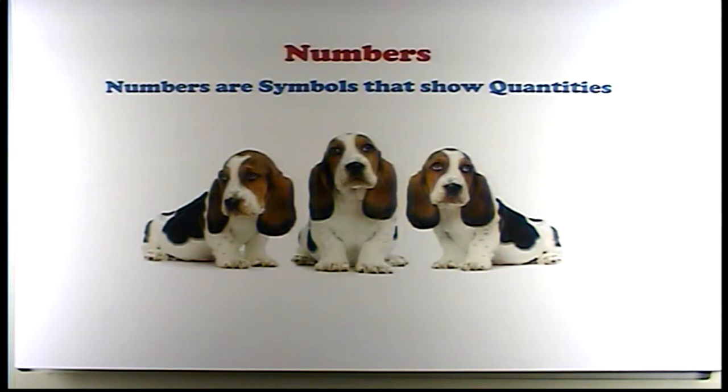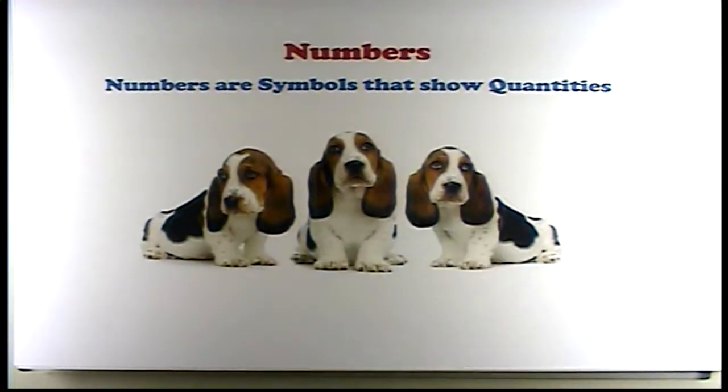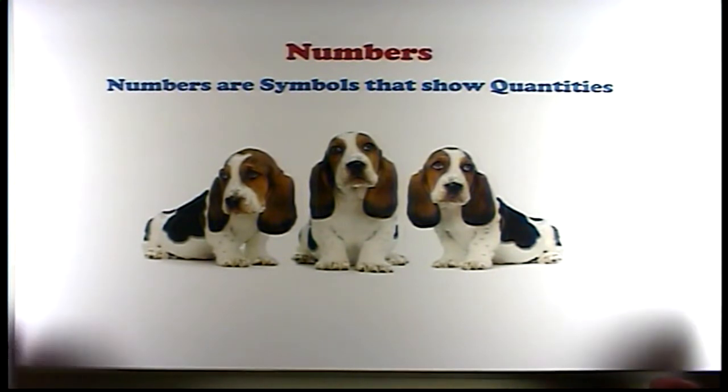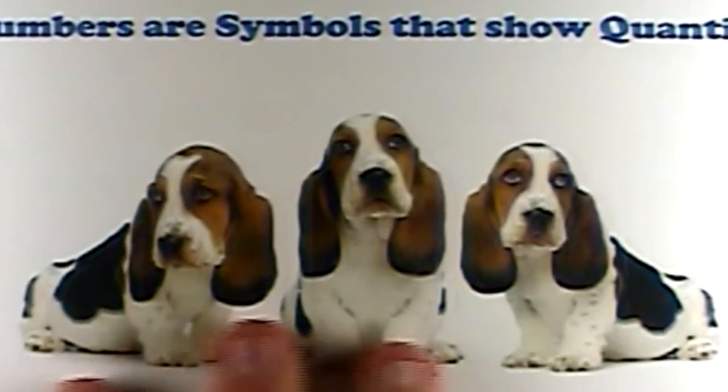Now, numbers are symbols that show quantities. For instance, right here we have a picture of three dogs, and I can count them: one, two, three basset hounds. And so, if someone were to ask me, how many basset hounds do we have here in this picture, I would have to say that we have three basset hounds, or three dogs, in this picture. So, numbers are a way of allowing me to quantify the number of objects, or in this case, dogs, that are in this picture. So, that's why numbers are very, very important.